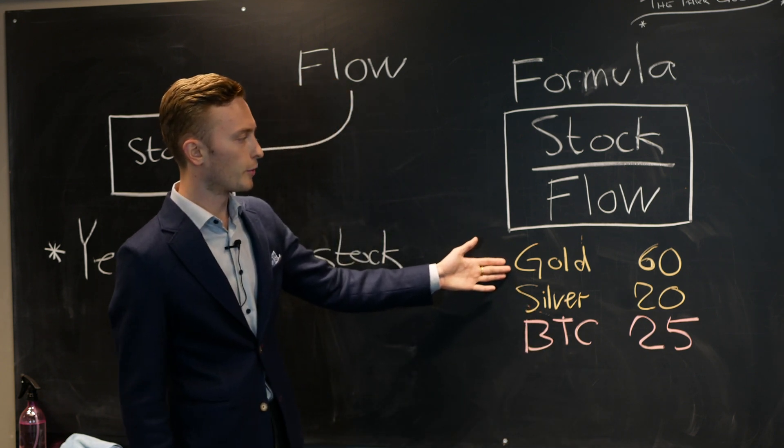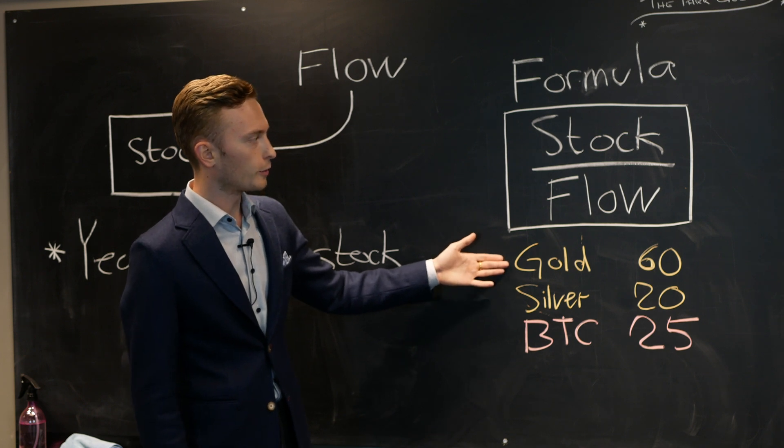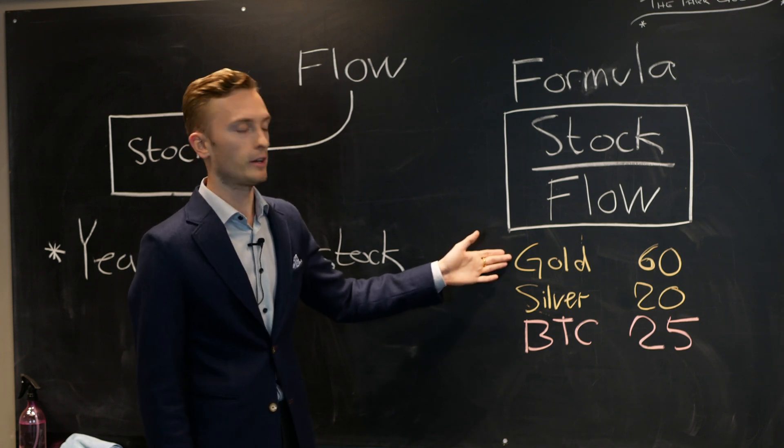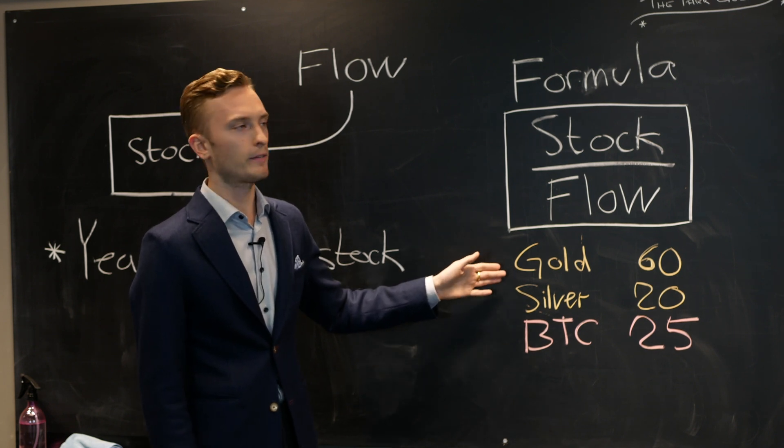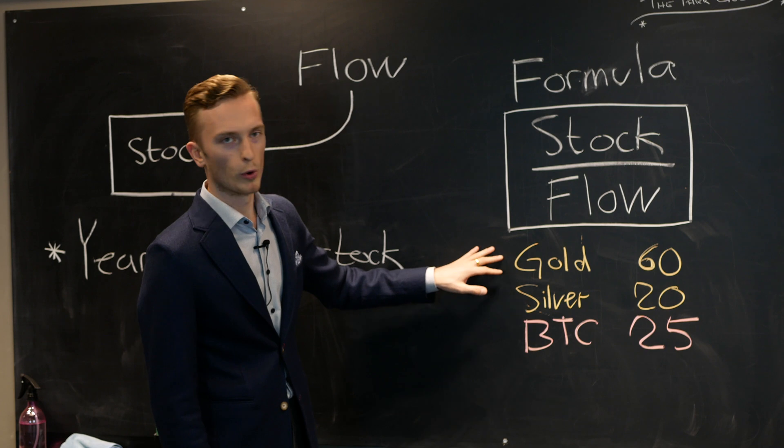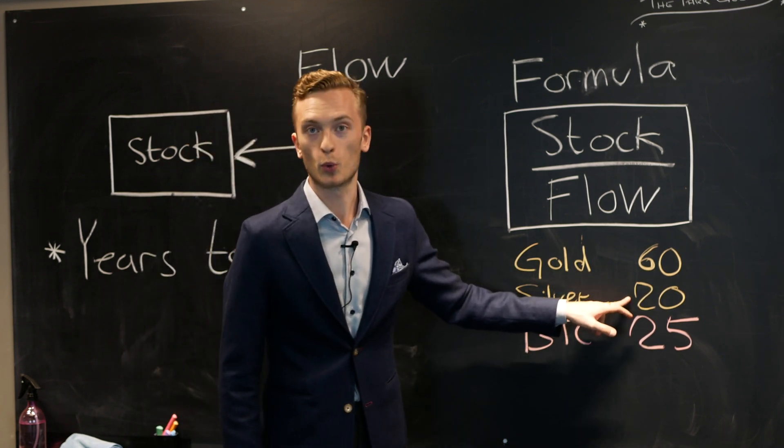And here I've also written them for gold and silver and gold has a stock to flow ratio of 60 which is a higher number than Bitcoin and the higher stock to flow ratio you have the more precious or the more scarce a resource really is. And silver has a stock to flow ratio of 20.